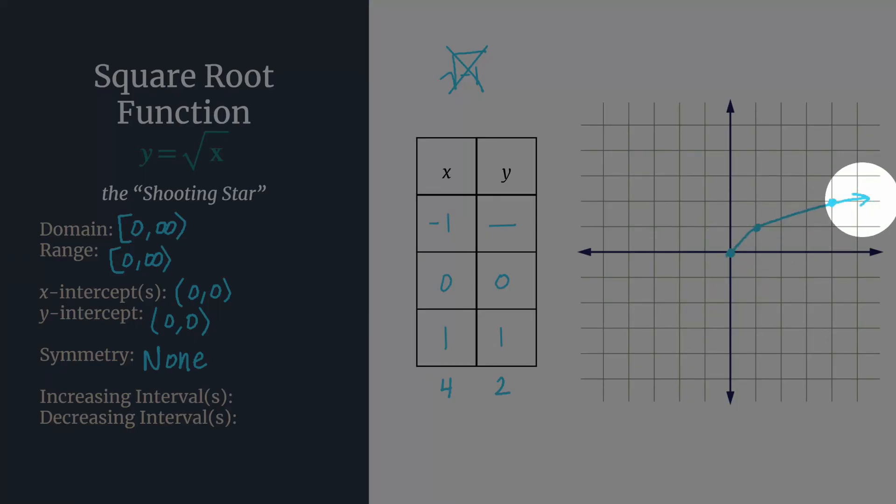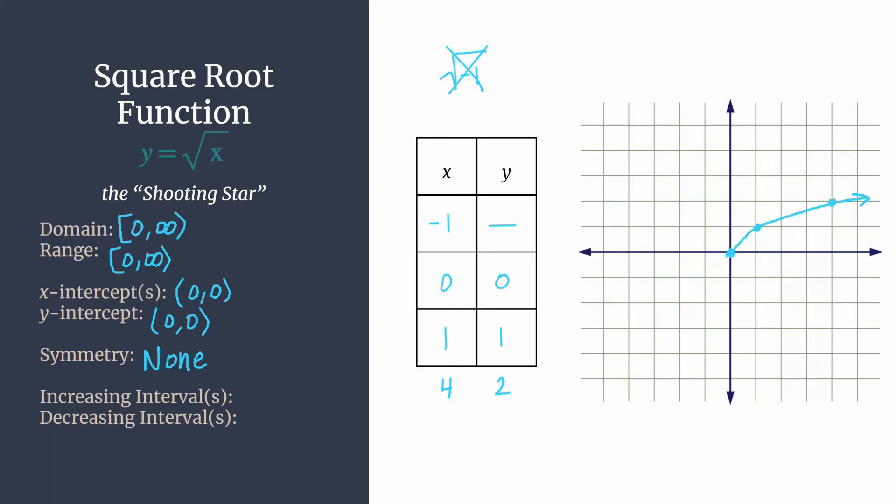And we'll say it's increasing from our first point at zero, our x of zero, on to infinity. So it's only increasing, there are no decreasing intervals. And just like we always do with increasing or decreasing intervals, we use parentheses. So we are increasing from zero to infinity and decreasing nowhere.